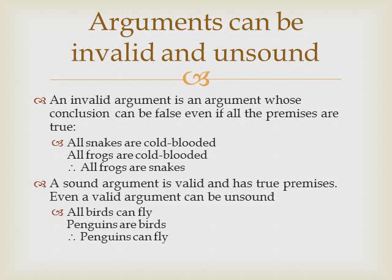Arguments can be invalid and unsound. An invalid argument is an argument whose conclusion can be false even if all the premises are true. For example, it's true that all snakes are cold-blooded, and it's true that all frogs are cold-blooded. But from that, we can't conclude that all frogs are snakes. This is an example of an invalid argument — the conclusion is false even though the premises are both true.